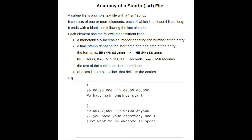A subrip file has a quite simple format as shown here. Each subtitle has a number, a range for when it appears on screen, the text, and an empty line terminator. Some video sites, such as YouTube and Vimeo, allow you to upload the subrip file separately, so you don't necessarily need to burn in the subtitles.